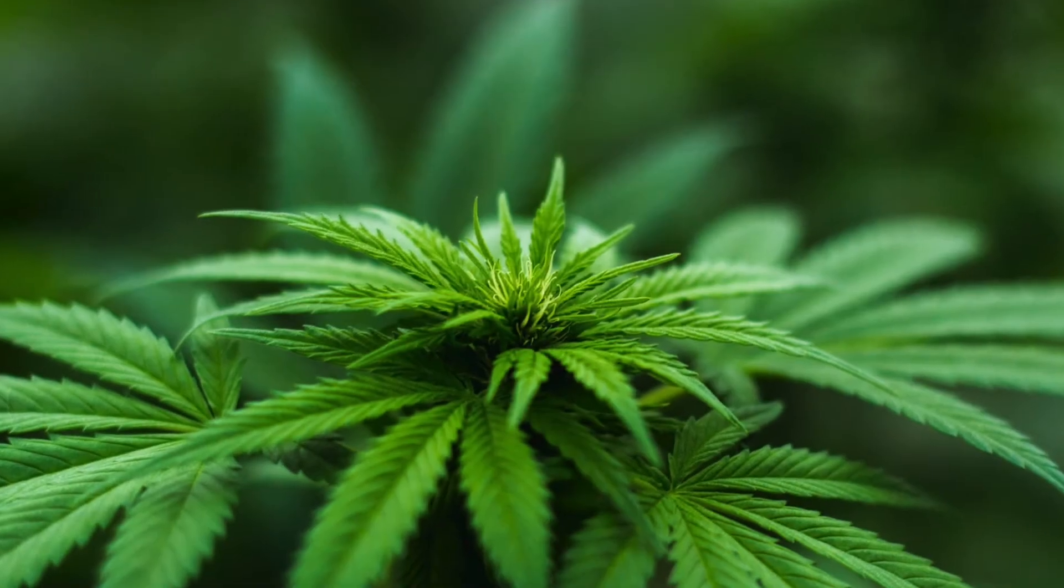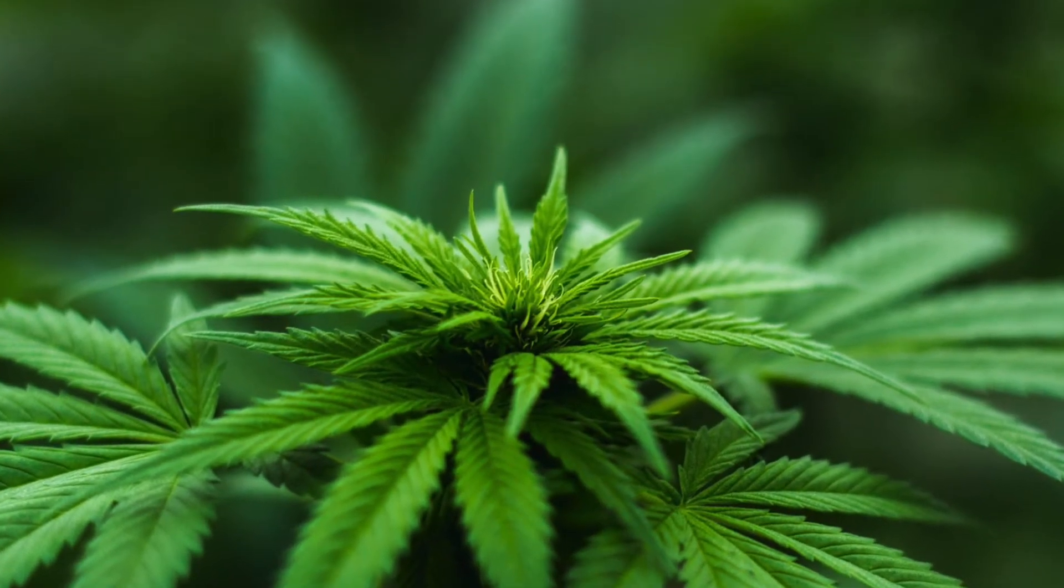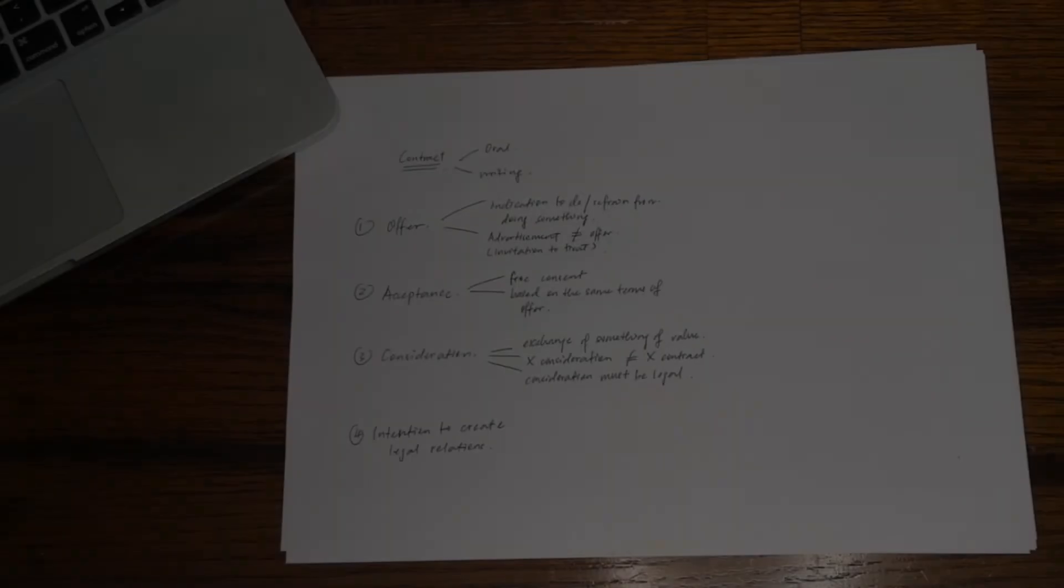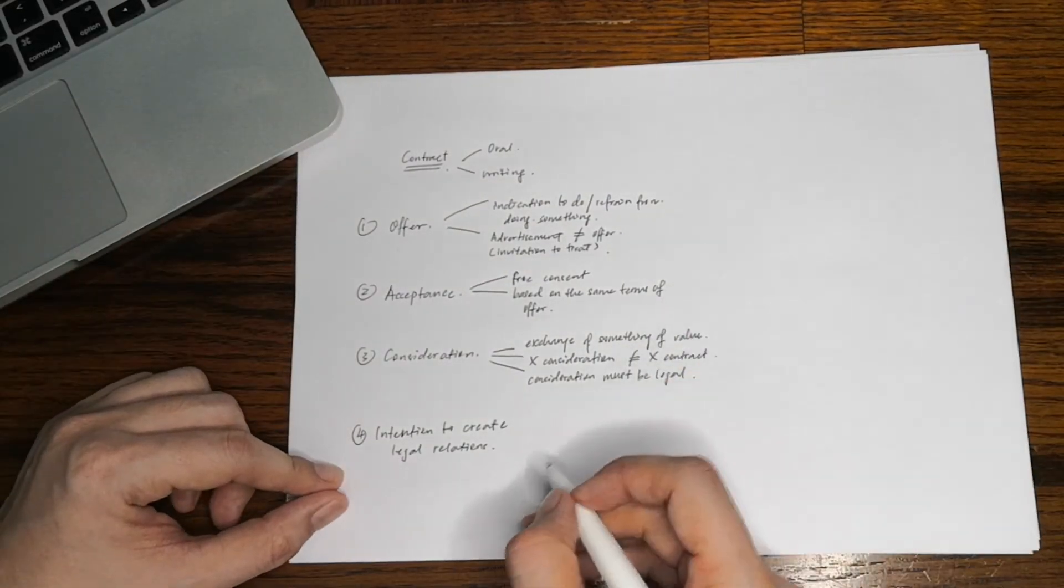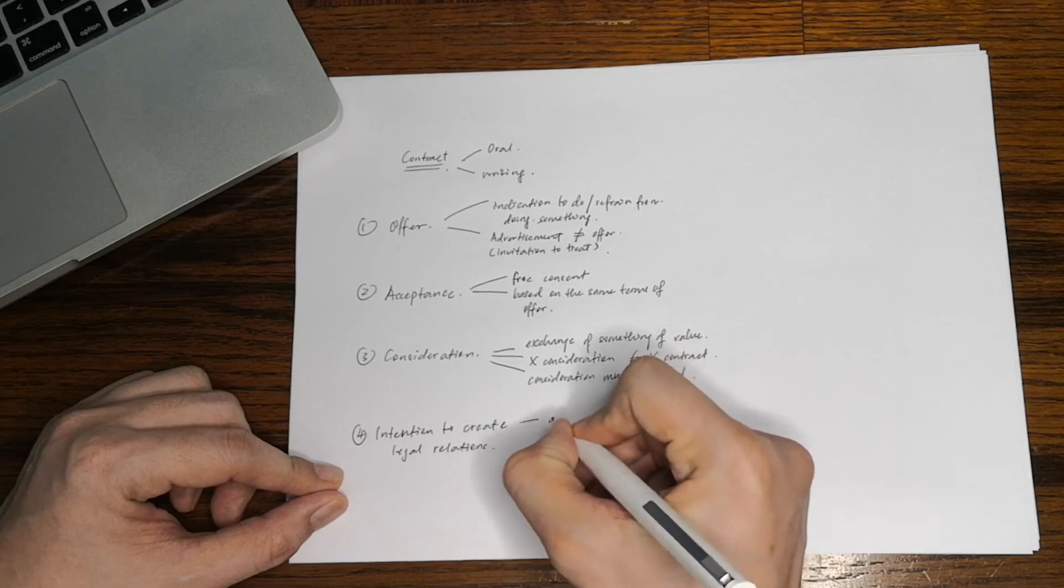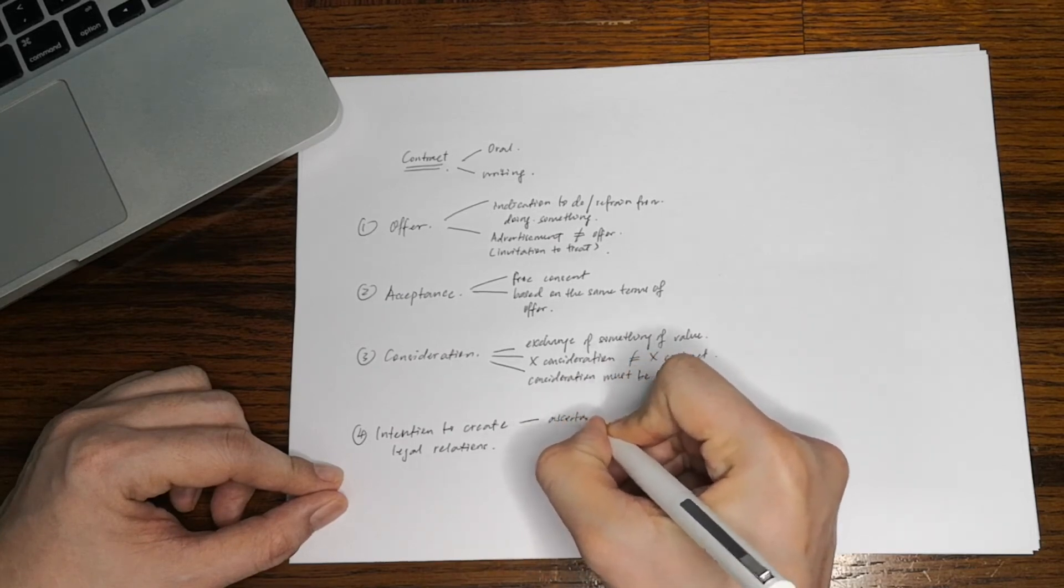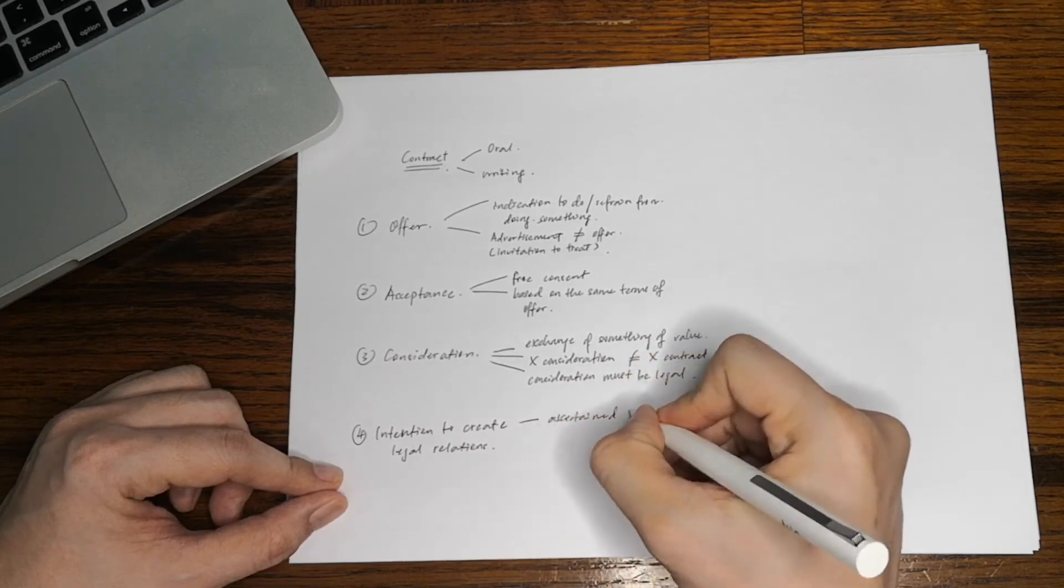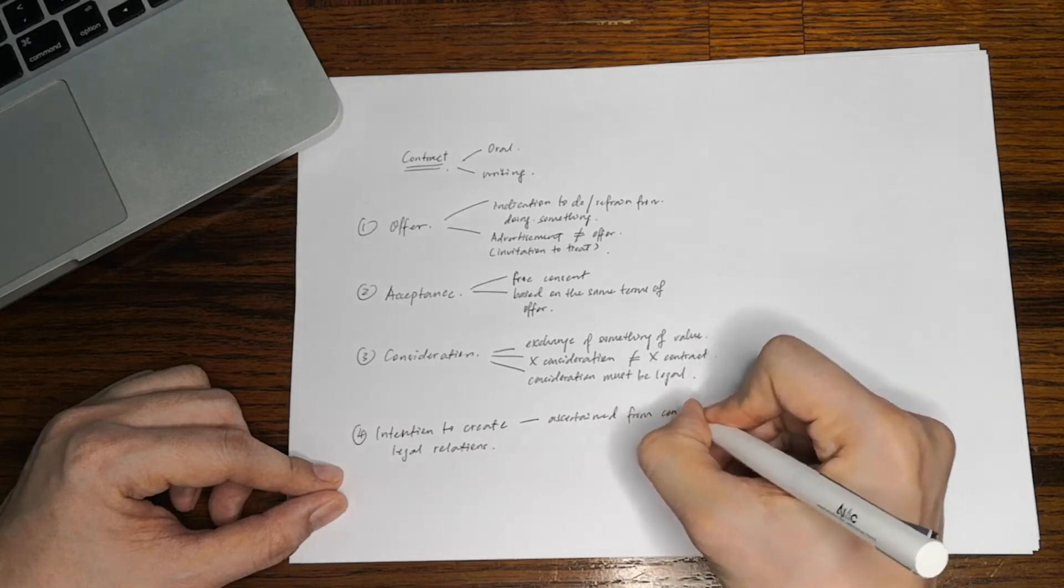The absence of any consideration, or if the consideration is illegal, will render the contract void. For example, an exchange of illegal substance with a cup of americano. An intention to create legal relations is an intention to enter into a binding contract. Such intention can be ascertained from the terms of the agreement or the party's conduct.